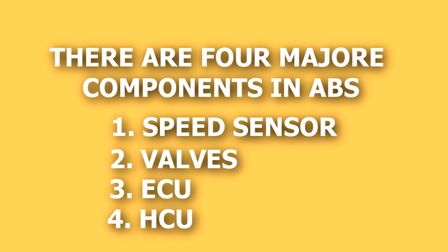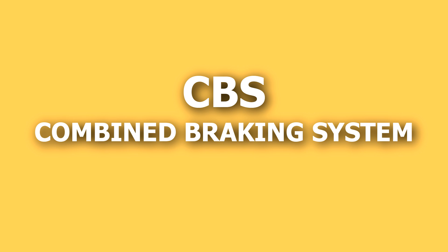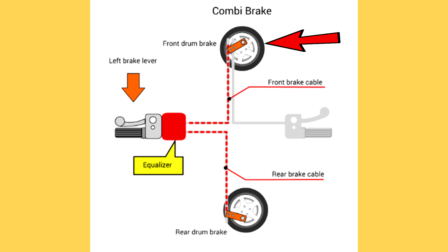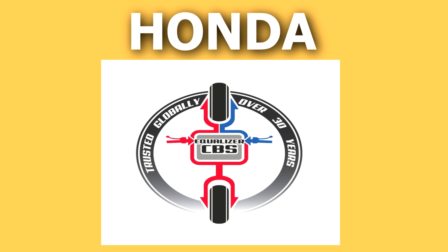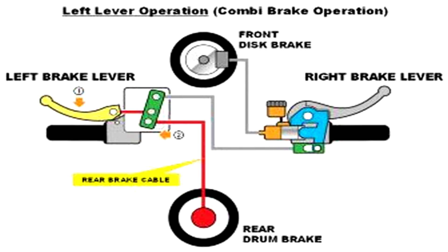Now let's talk about CBS. CBS stands for Combined Braking System. In a CBS system, when the front brakes are applied, some percentage of braking force is automatically applied to the rear brake as well. This reduces the braking distance and improves stability while braking. CBS was introduced by Honda in the two-wheeler segment, where the brakes are simultaneously applied on both front and rear wheels for the most effective braking.